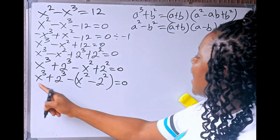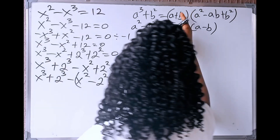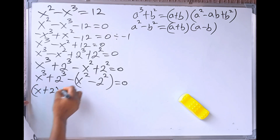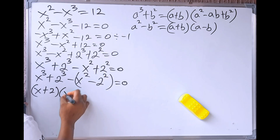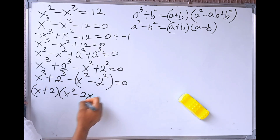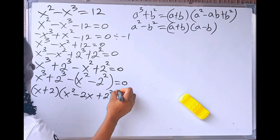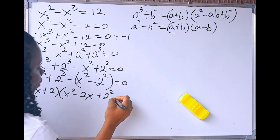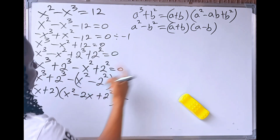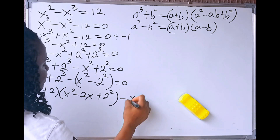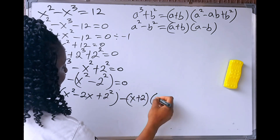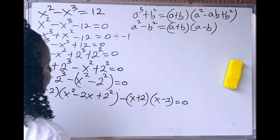Now let's apply these two rules. For the sum of cubes, a is x and b is 2. So we expand to get (x plus 2) into (x squared minus 2x plus 2 squared). Then for the difference of two squares, we write minus (x plus 2) into (x minus 2). All this equals 0.